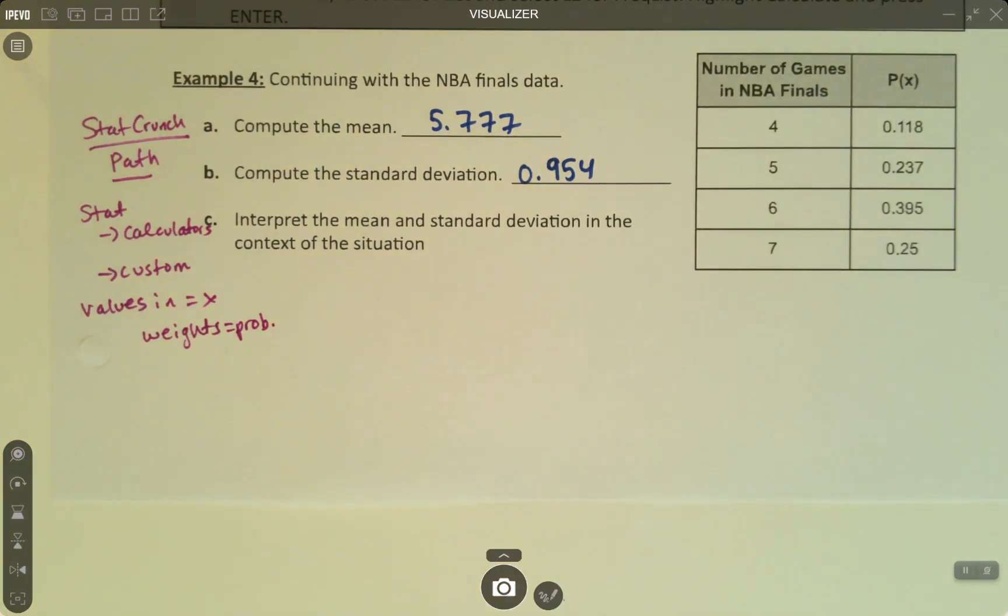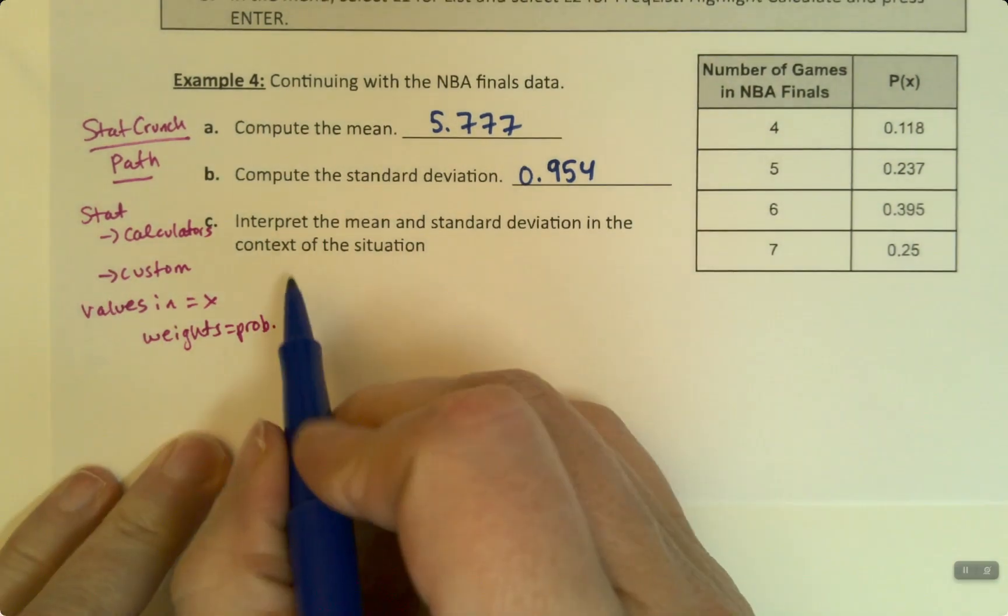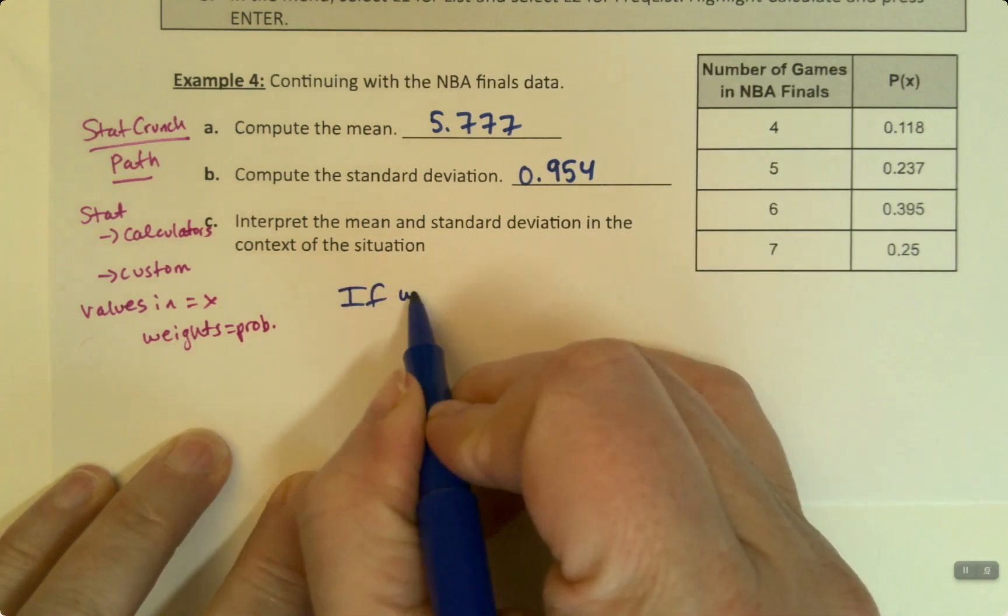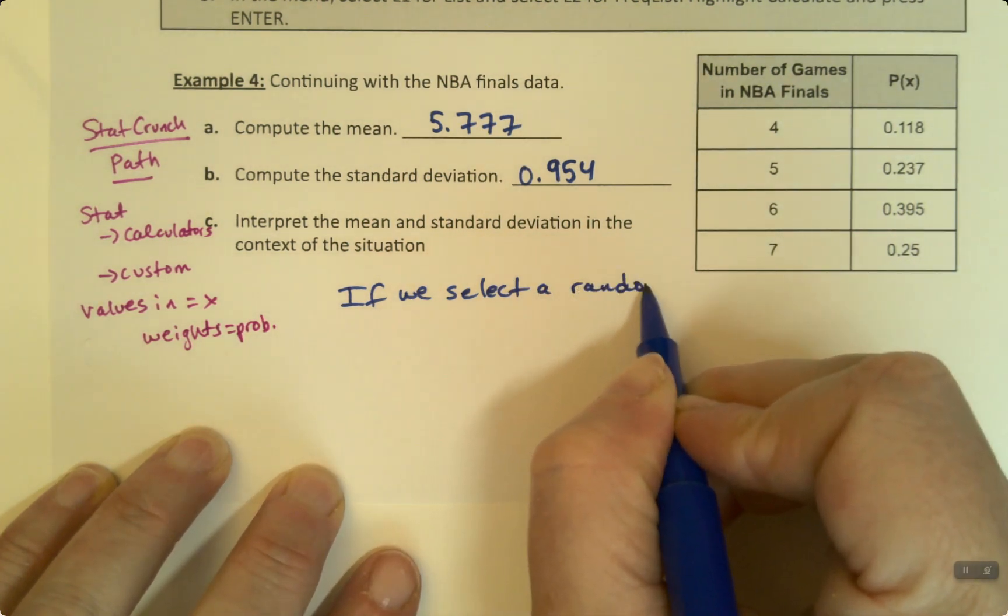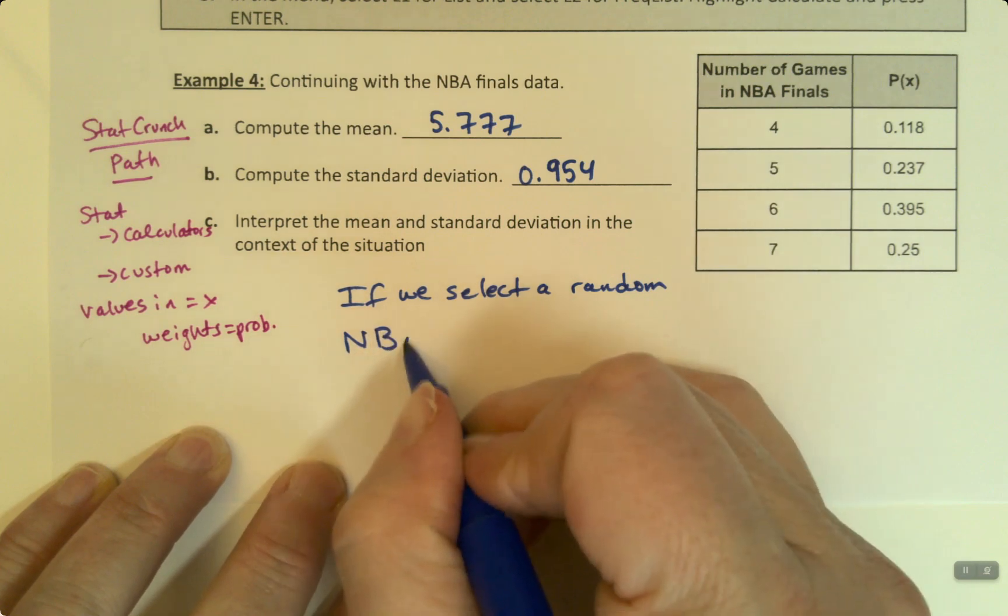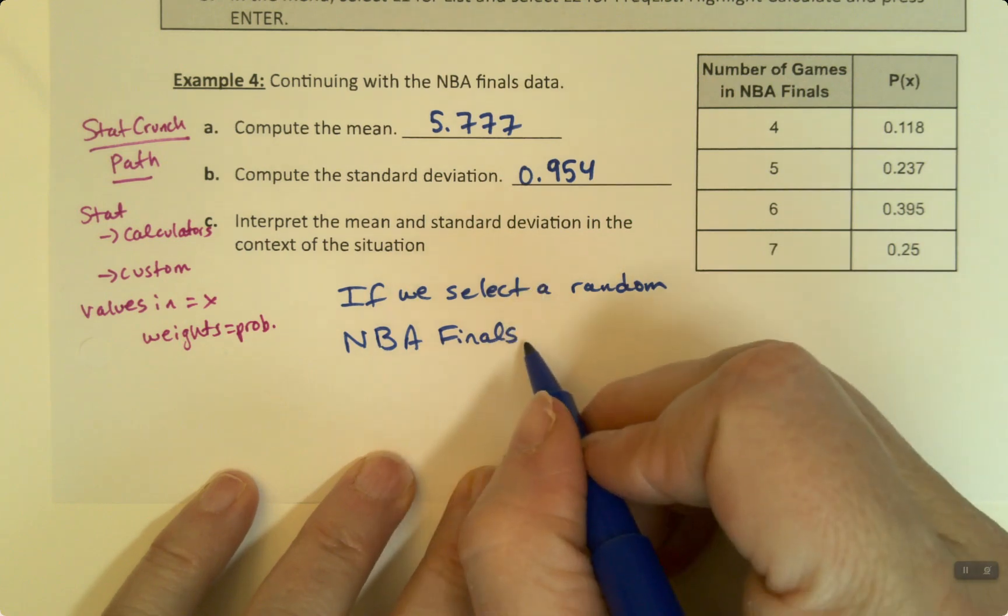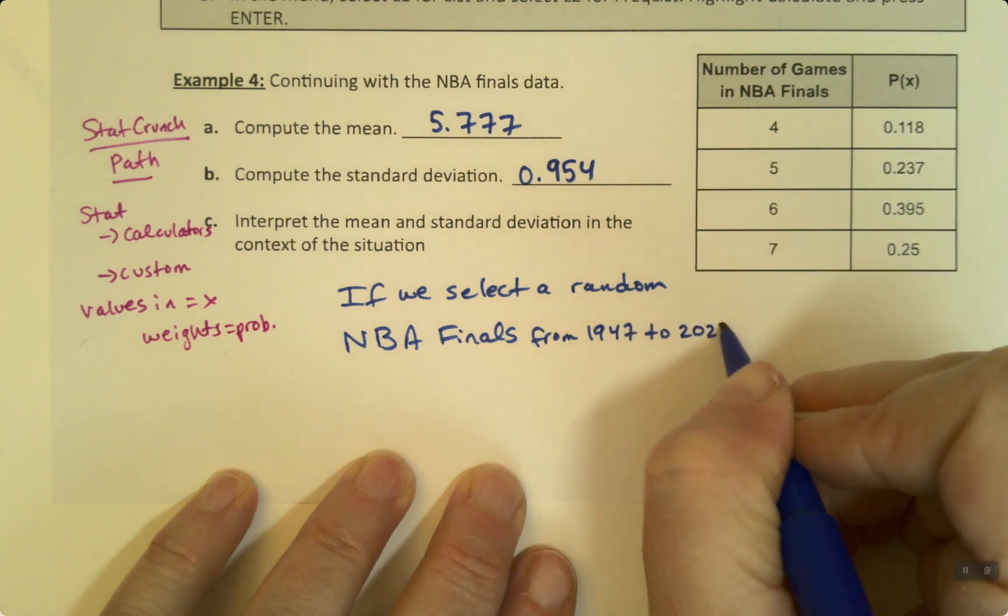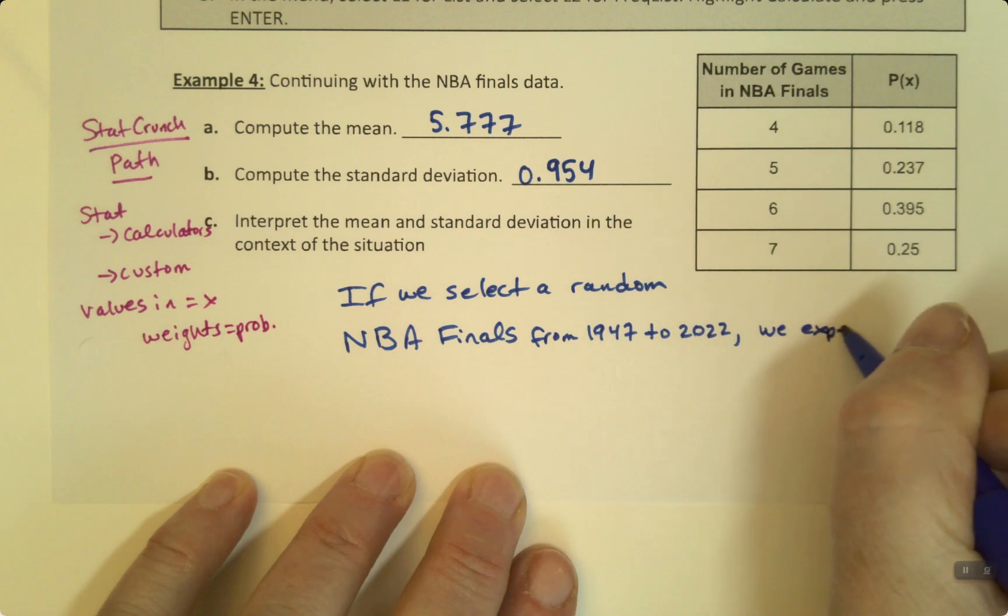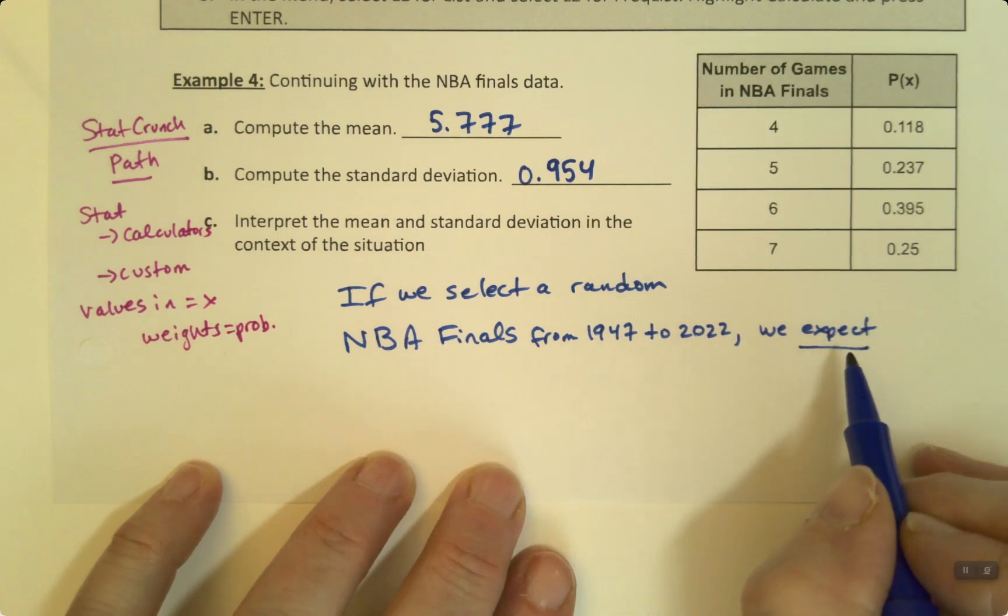Alright, now let's interpret that mean and standard deviation in the context of the situation. Okay, so if we select a random NBA Finals series from 1947 to 2022, we expect, right, there's that word, expect, because the mean is expectation.